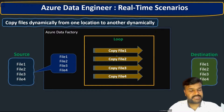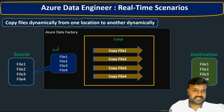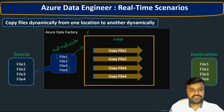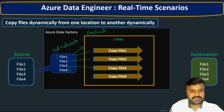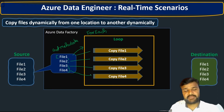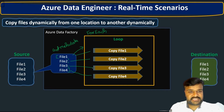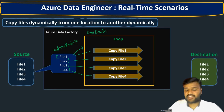In ADF, we are going to use the Get Metadata activity to fetch the file names, and we will get them in the form of an array. This array we give as input to a For Each loop activity. For every value inside the array, it will work individually — either sequentially or in parallel, based on our configuration. These are the steps we need to perform in ADF.